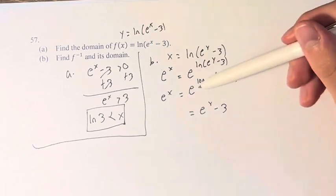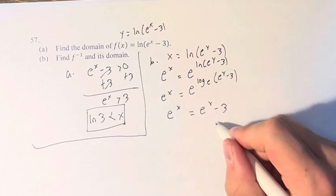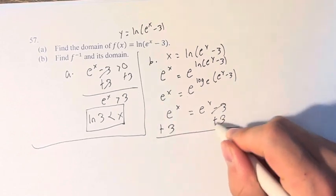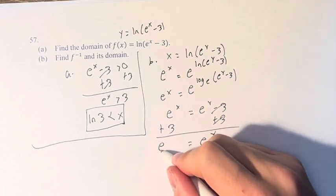Think of it as the exponent and the logarithm canceling each other out, and we're just left with what's inside. And we get e^x, adding 3 to both sides, e^y is equal to e^x plus 3.